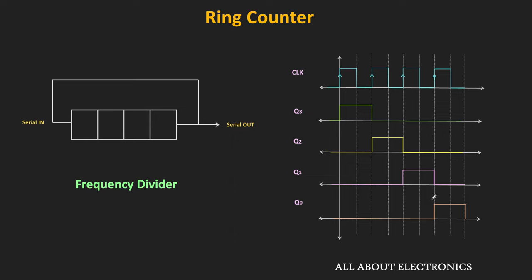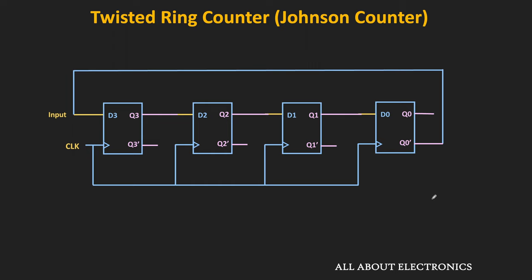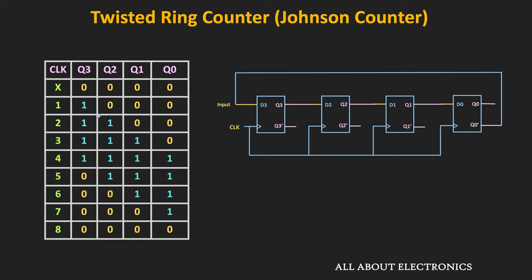Similarly, using the shift register, we can also design the Johnson counter. The design is similar to the ring counter, but here instead of the Q output of the last flip-flop, the Q-bar output is connected to the input — that is why it is also known as the twisted ring counter. Initially, with the help of the clear input, all flip-flops are reset to 0, so the initial content is 0000. Since Q0-bar is connected back to the input, at the next clock edge the input to D3 will be 1. So after the first clock pulse, Q3 becomes 1 and the remaining 3 bits get right-shifted, making the output 1000.